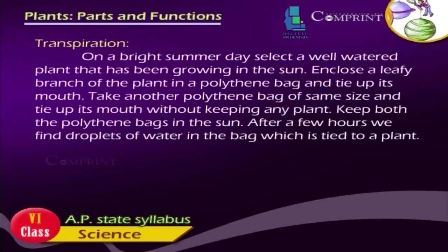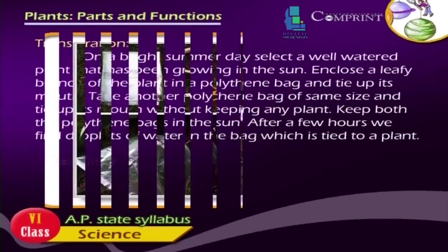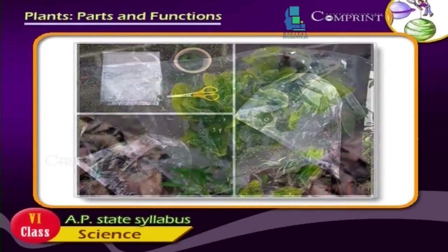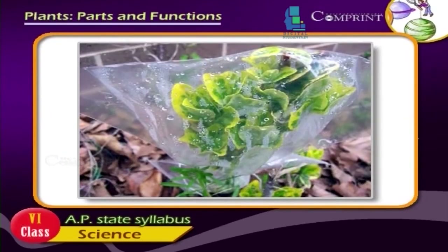On a bright summer day, select a well-watered plant that has been growing in the sun. Enclose a leafy branch of the plant in a polythene bag and tie up its mouth. Take another polythene bag of the same size and tie up its mouth without keeping any plant. Keep both polythene bags in the sun. After a few hours, we find droplets of water in the bag which is tied to the plant.